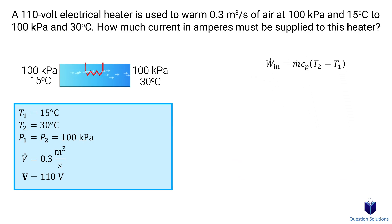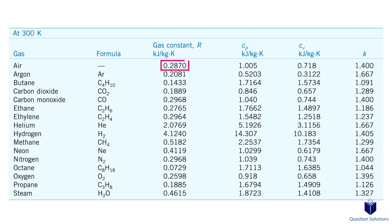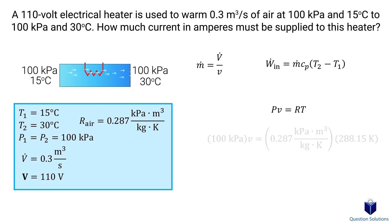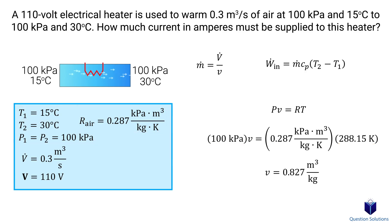We can use the enthalpy difference equation to figure it out, but we don't have mass flow or the specific heat of air yet. For mass flow, we can use the equation: mass flow equals volume flow divided by specific volume. We don't have the specific volume of air, so we can figure that out using the ideal gas equation, since at the given parameters the air acts as an ideal gas. We need the gas constant of air from a table. Plugging in our values — remembering that 15°C equals 288.15 K — we can solve for the specific volume.